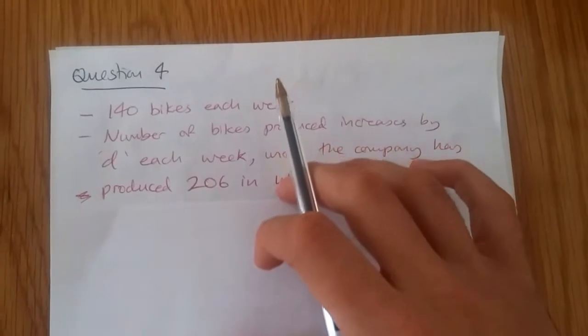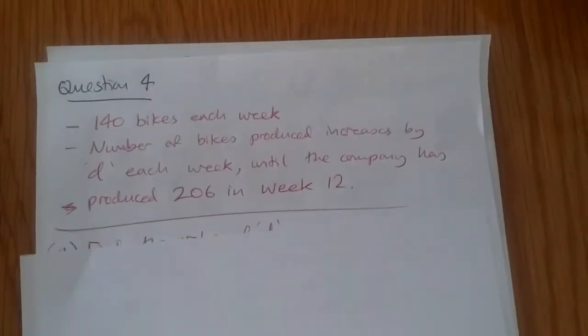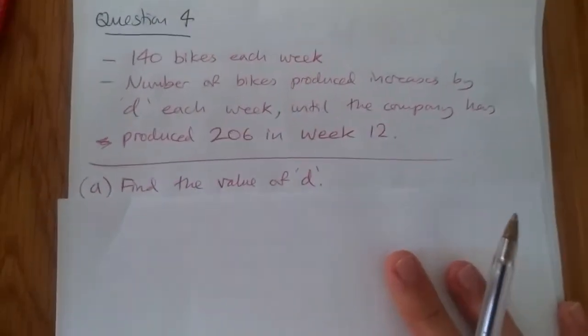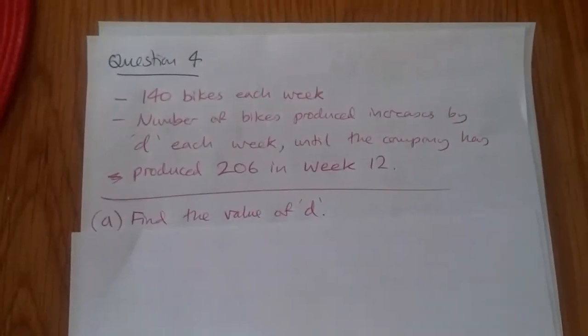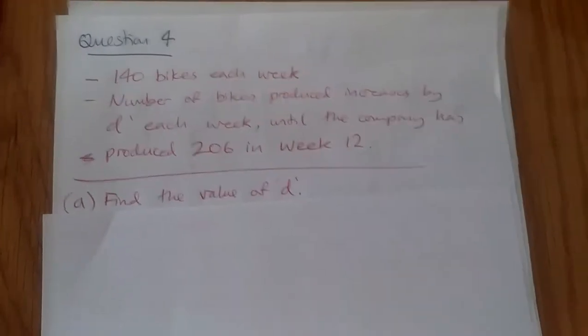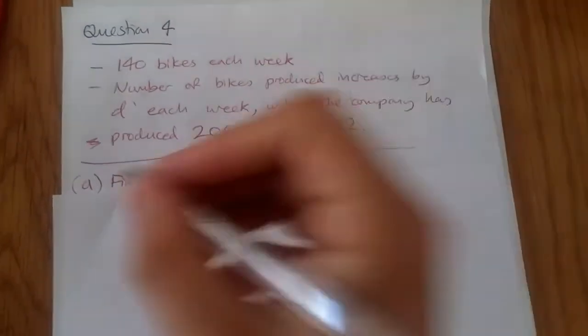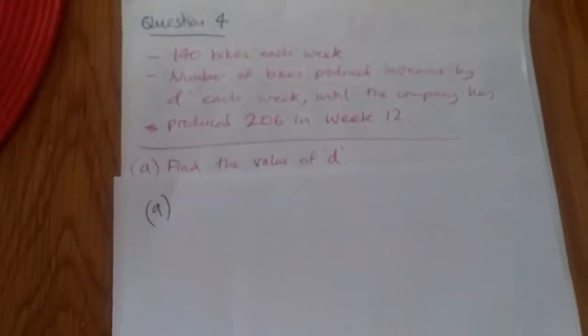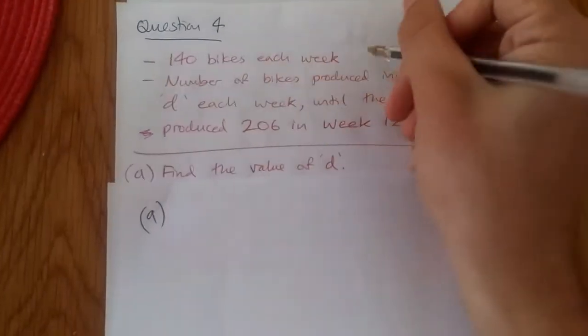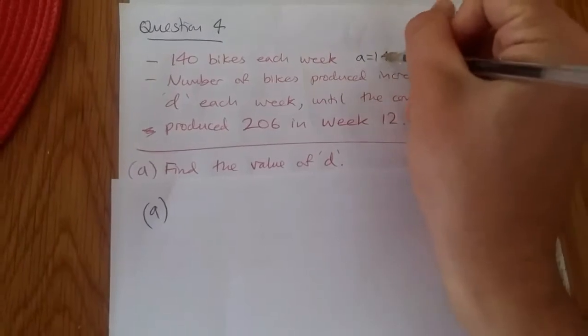So here they would ask us, let's have a look, find the value of the numbers, find the changing difference. Actually in this case find the difference per week. So pretty straightforward, I mean nothing special here. So let's call this one part A. We know firstly that this represents A, right? So we have A equals 140.